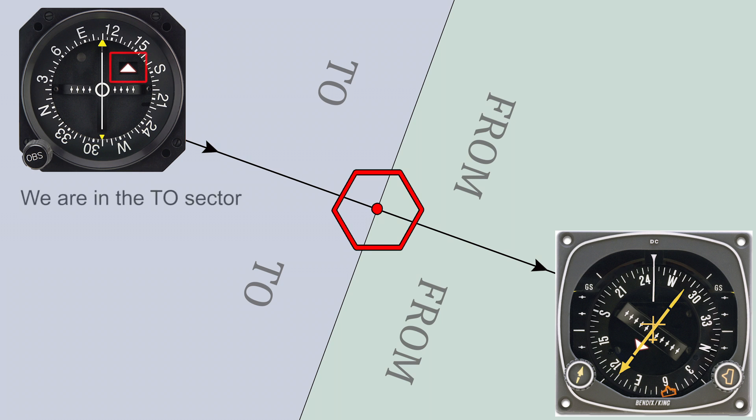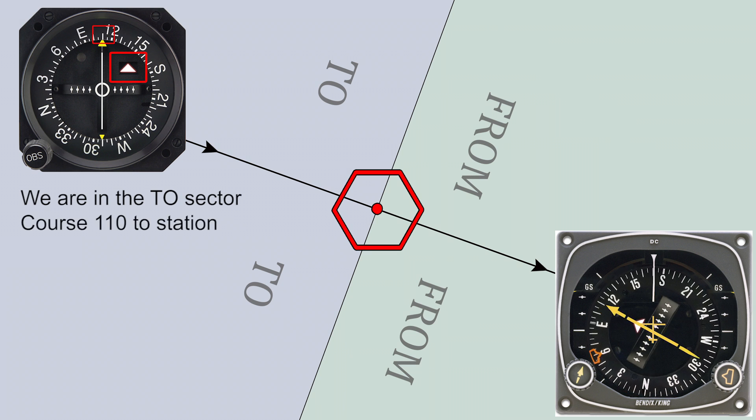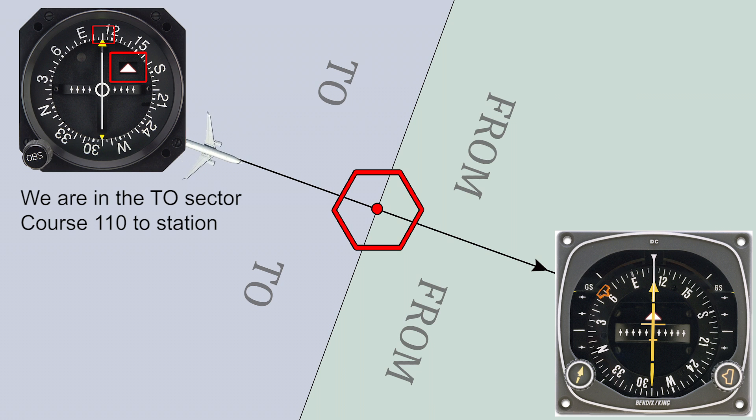If the flag is showing a to indication, that means if you turn to the course indicated on the top of the instrument, you will fly directly to the station on the radial indicated on the bottom of the instrument.